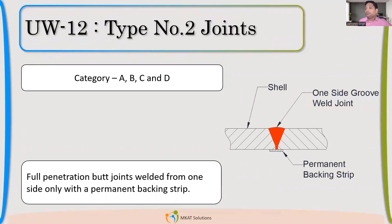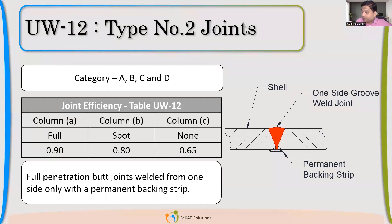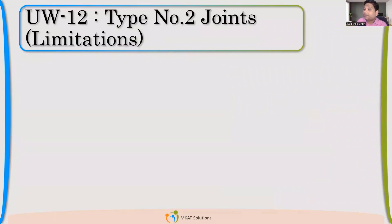Now, type number 2 applies when I am trying to achieve full penetration but the permanent backing strip I have used cannot be removed — the joint becomes inaccessible from the other side. In that case, if I am doing full radiography of this joint, I will be able to get only 0.9 as efficiency. Even though I might have achieved full penetration and I am just not able to remove the backing strip, the code does not permit joint efficiency as 1. Only 0.9 is what we can have.